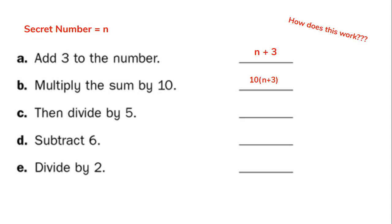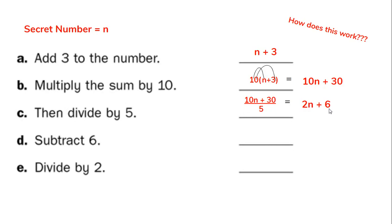This is a good place to use distributive property. I'm going to do 10 times n and 10 times 3, and I'll end up with 10n + 30. Now my next step says divide by 5, so I have (10n + 30) ÷ 5. I'll take 10n divided by 5, which is 2n, and 30 divided by 5 is 6. But I can't add those parts together — these are not like terms. So what I end up with is 2n + 6.